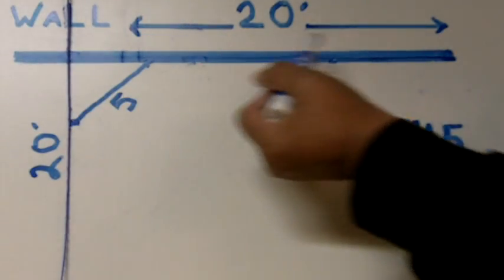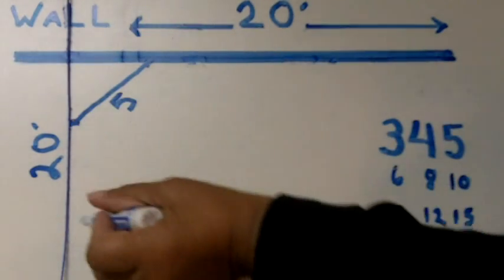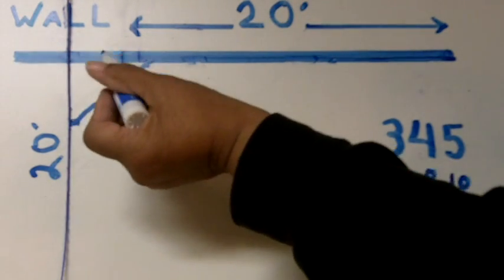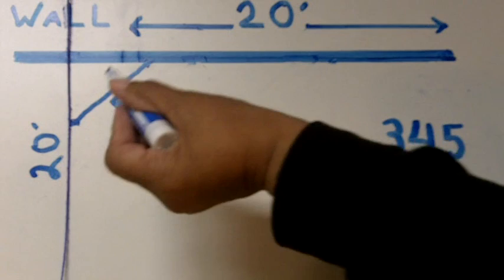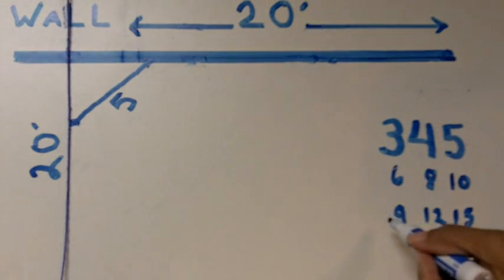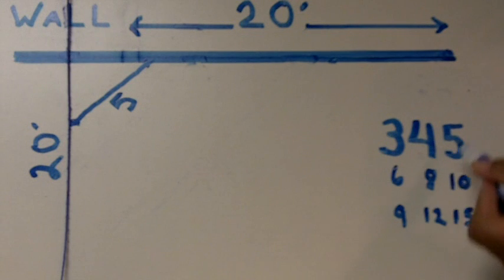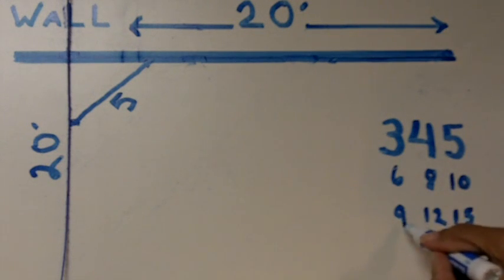Now our wall is 20 feet long. That's a long wall to use such a small formula of 3, 4, 5, right? So we're going to come back to the formula and what we'll do is we'll use multiples of 3, 4, and 5. And we're going to go with 9, 12, and 15.